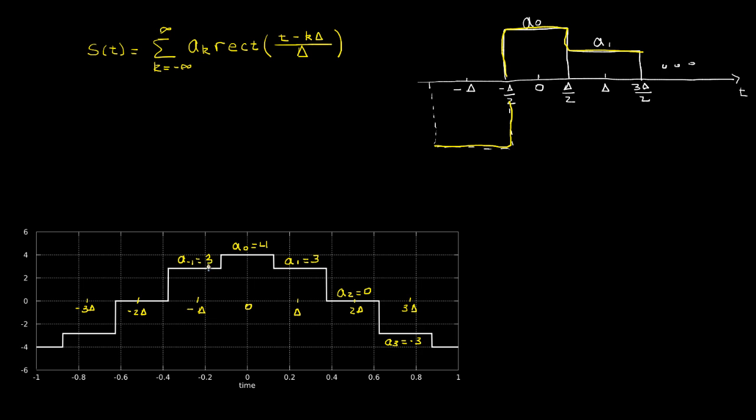At negative 1, we got a value of 3, a negative 2 is equal to 0, and a negative 3 looks like it's equal to negative 3. And then, if we look at this width, here, that's delta.